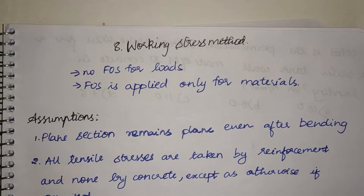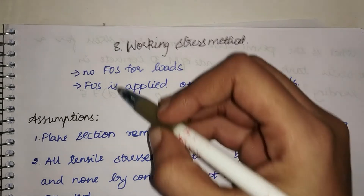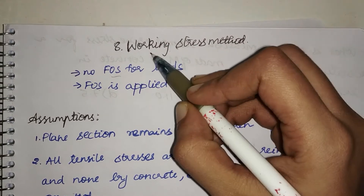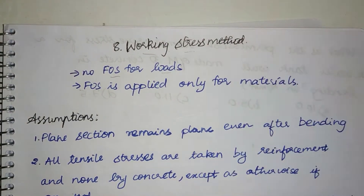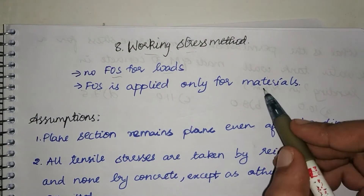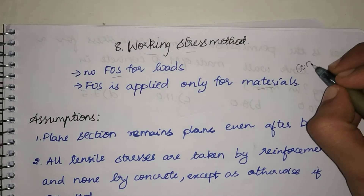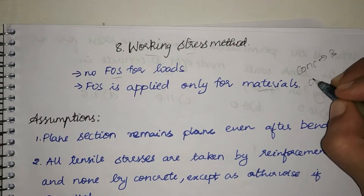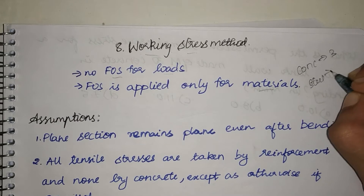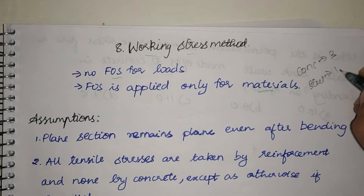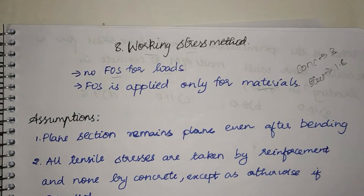We already saw the basics of Working Stress Method in the previous video, where we saw the difference between Working Stress Method and Limit State Method. The basic difference is that there is no factor of safety for loads — we just take the working loads into account. The factor of safety is applied only for the materials: for concrete it is 3 and for steel it is 1.8.